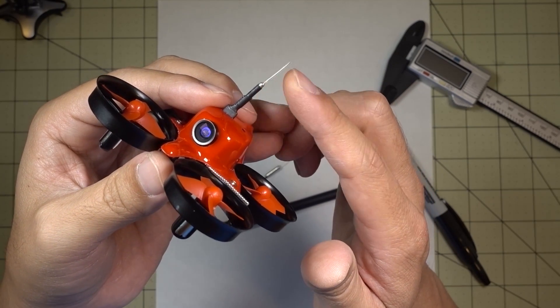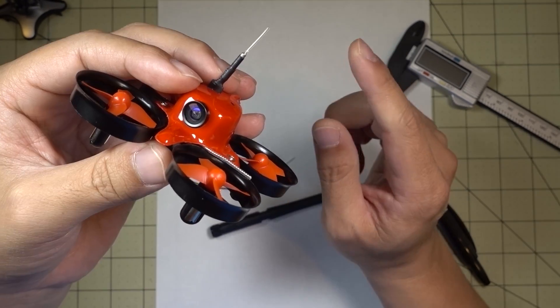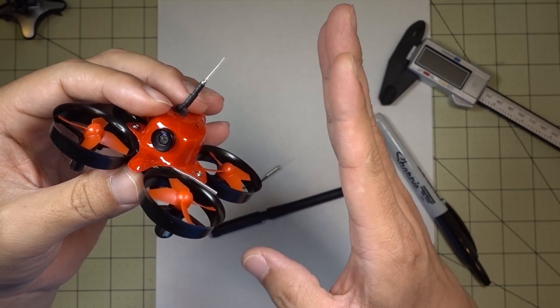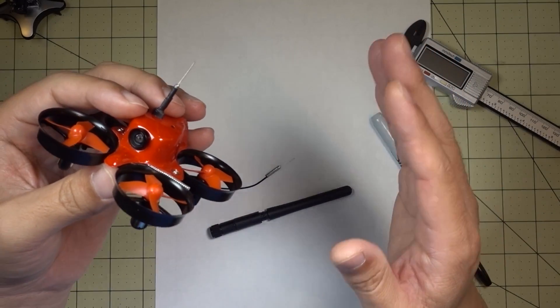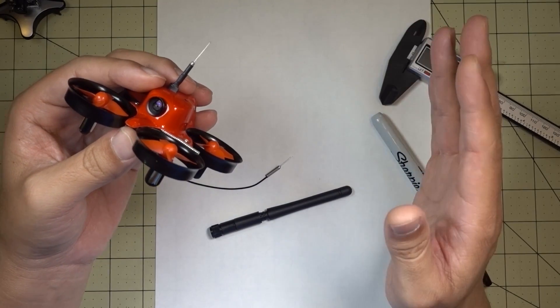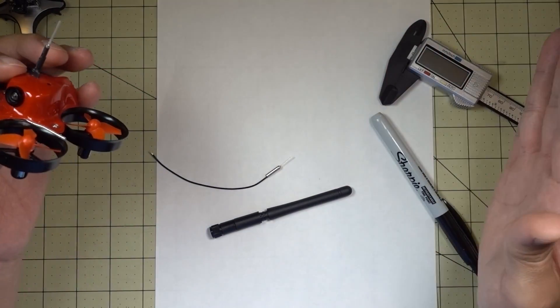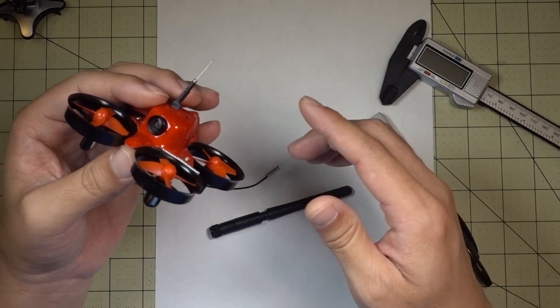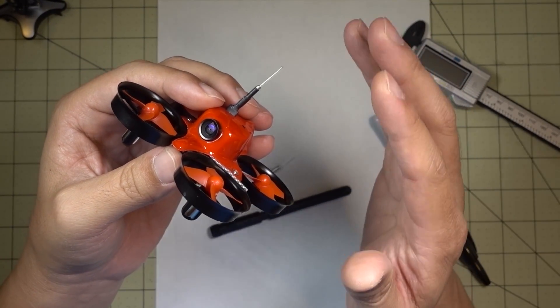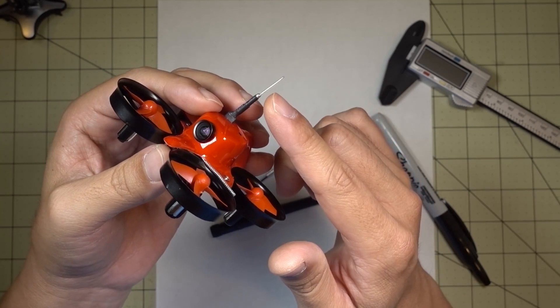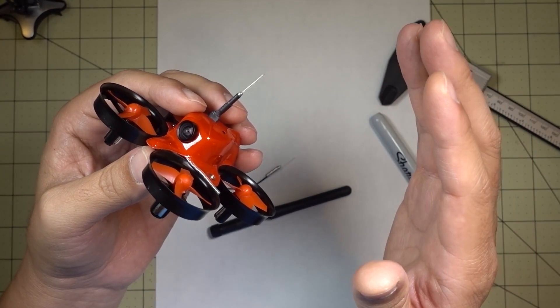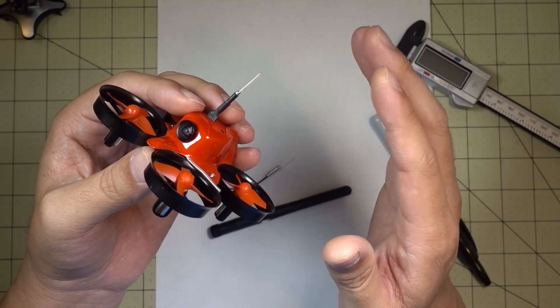The length of this exposed part here is going to be the determining factor. The 5.8 gigahertz band is not just one channel. It's a bunch of frequencies and a bunch of different bands that range from about 5.3 something gigahertz to 5.9 something gigahertz. It's a pretty wide range of frequencies. This antenna here, this exposed part, is going to send out a frequency that's optimal for this length. And it turns out that on mine here, it's different from what the optimal length would be for 5.8 gigahertz.